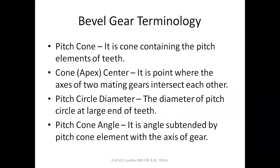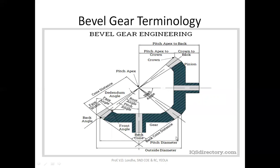Then pitch cone angle — what is this pitch cone angle? It is the angle subtended by the pitch cone element with the axis of the gear. As shown here, it is the angle subtended by this center line with respect to the axis of the gear.